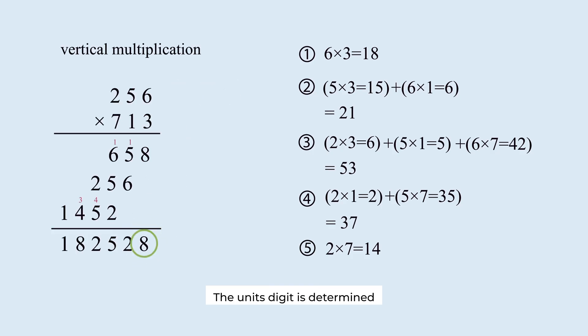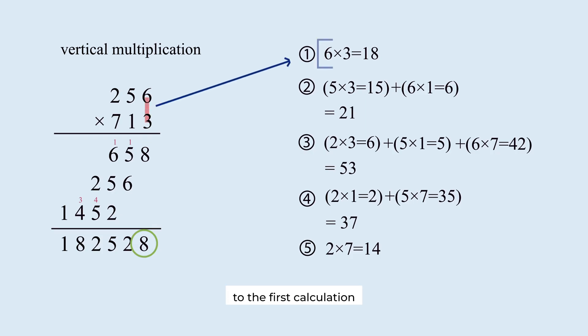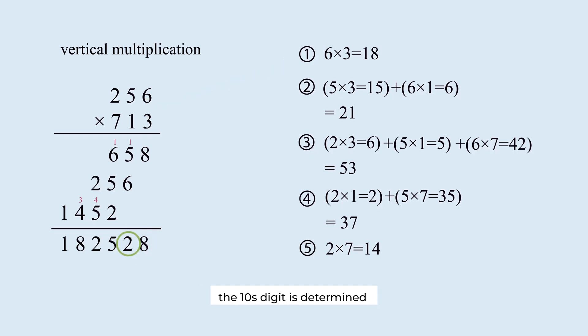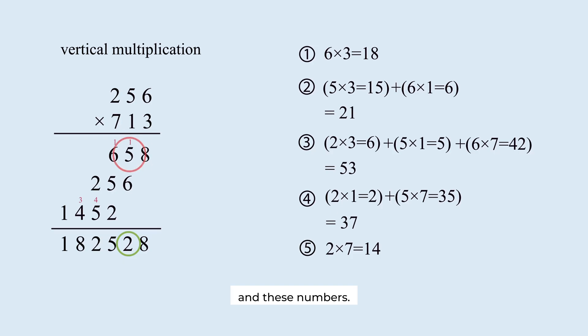The units digit is determined by the product of these numbers. This step corresponds to the first calculation in the fast multiplication trick. The tens digit is determined by the carryover from the units digit and these numbers.